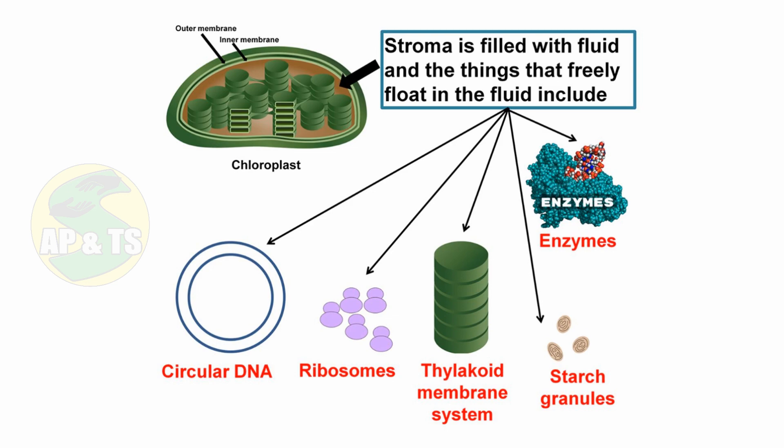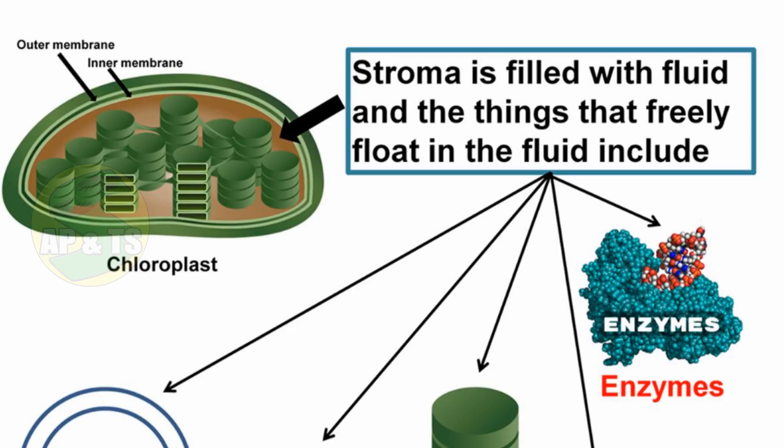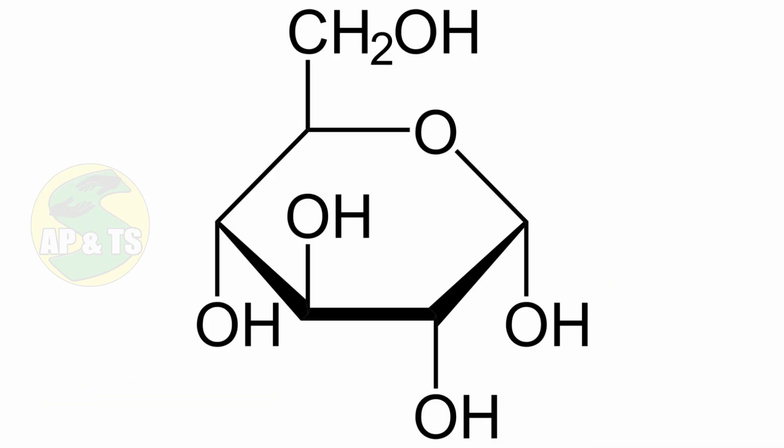Structures like grana, stroma lamellae, chloroplast DNA, ribosomes, and substances like starch granules and drops of lipid are suspended in the stroma. The biosynthetic phase of photosynthesis, that is, the light-independent reactions, occur in the stroma. Stroma consists of enzymes that are responsible for the synthesis of glucose, which later converts to starch.